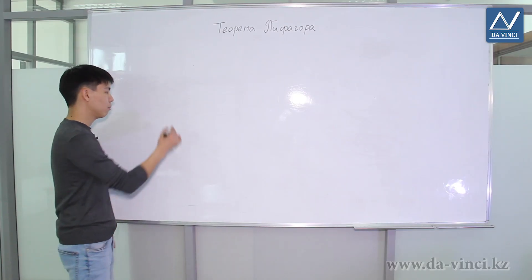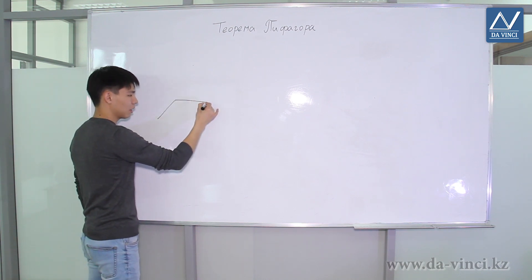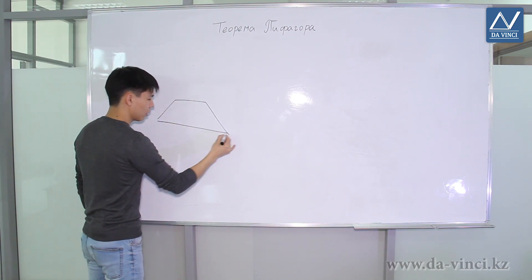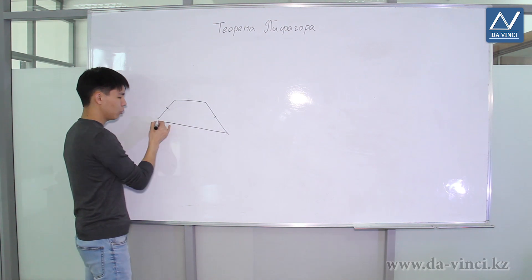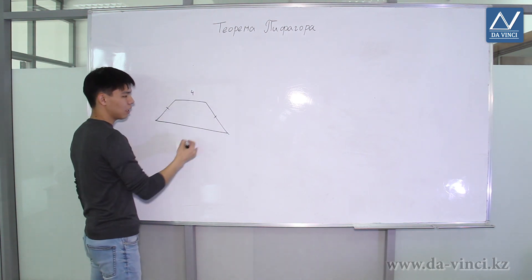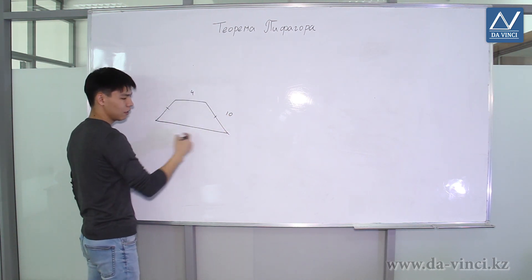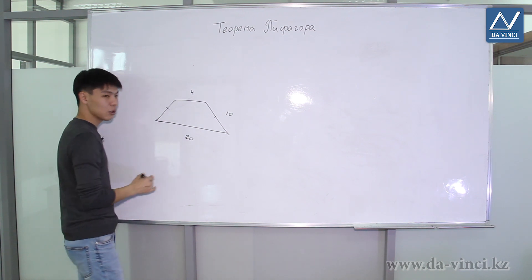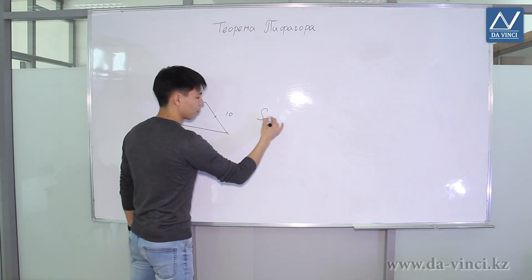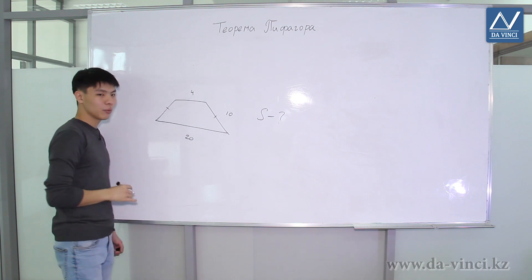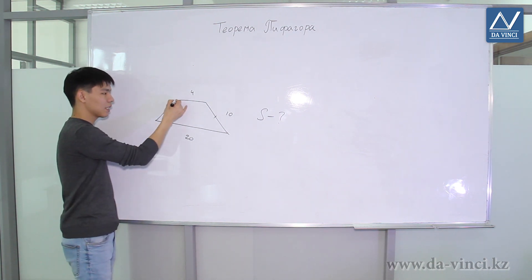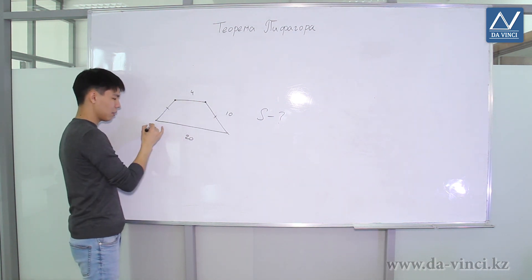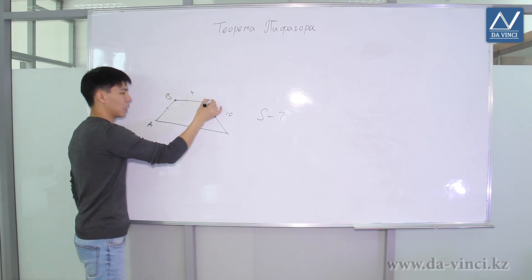Now let's take a look at another example. Let's say we have an isosceles trapezoid. Let the upper base be 4, side 10, and the lower base is 20. We need to find the area of this trapezoid. How can we find the area? We used to proceed in such tasks as follows. Let's mark the letters A, B, C, D.